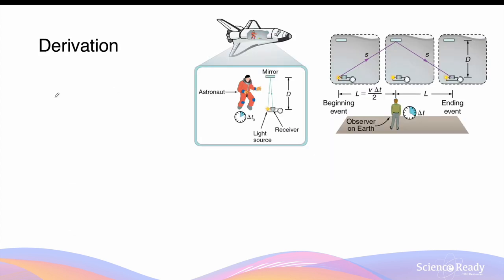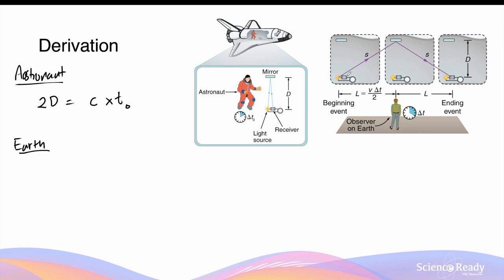The quantitative relationship between the time measured by the astronauts and the time measured by the observer on Earth can be analysed by considering the path travelled by the light beams. For the astronauts, light travels to the mirror and back, which is distance 2D, so this is equal to the speed of light multiplied by time t0. For the observer on Earth, light travels a triangular path of length 2s in time t.